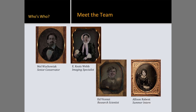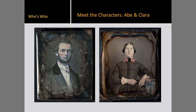Last but not least is Allison Rabin, who was with us over the summer from Rochester Institute of Technology and was working closely with the imaging and analysis of Abe, whom you will meet shortly. Allison is currently in the audience here in Baltimore. Our next two characters to introduce are Abe and Clara, the two daguerreotypes that we have been closely investigating over the past several months. Not much is known about either in terms of their character backgrounds and the lives they lived. Abe came in with a study collection to the National Museum of American History, and Clara was purchased on eBay. You will be seeing their faces quite a bit throughout the presentation.